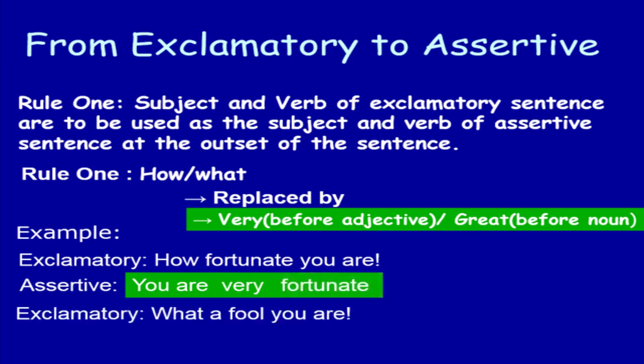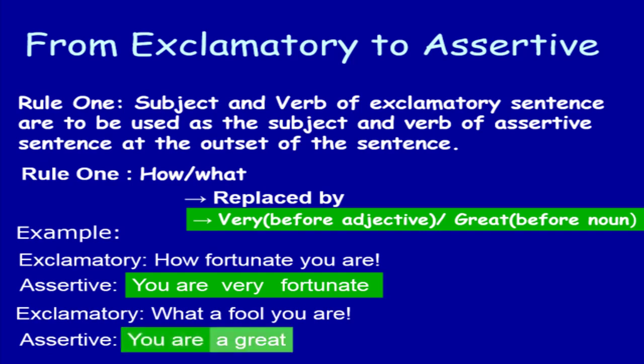Look at another example: 'What a fool you are.' The subject and verb are at the last of the exclamatory sentence. In the assertive sentence, write them at the very beginning: 'You are a great fool.' In place of 'what,' use 'great' because an adjective modifies a noun, and 'fool' is a noun. So: 'You are a great fool.'